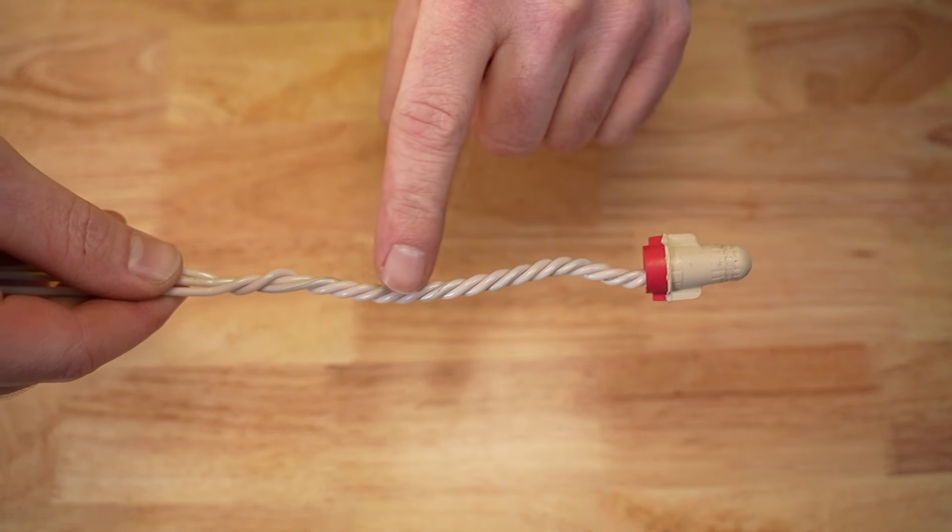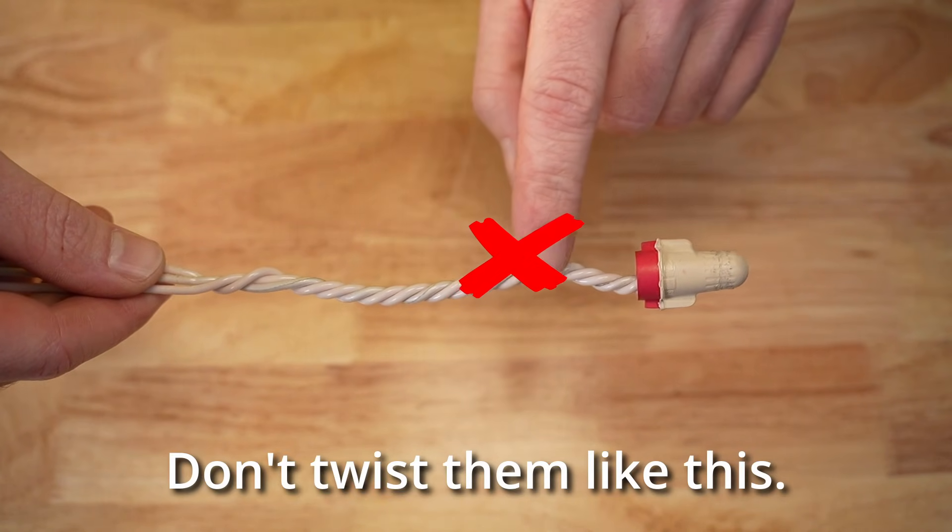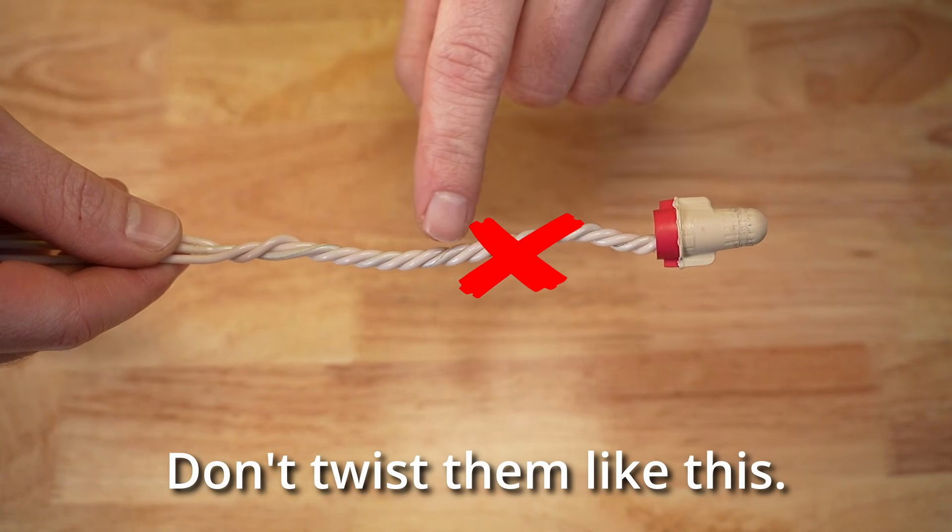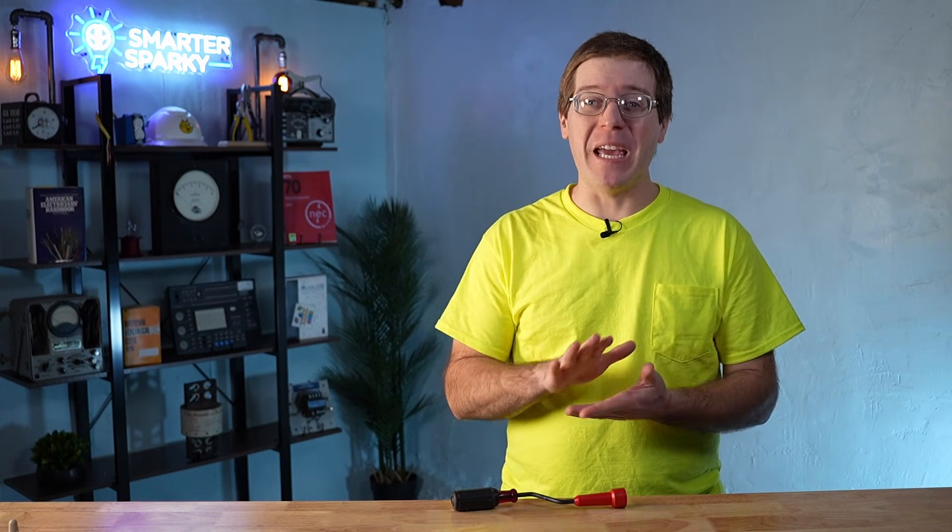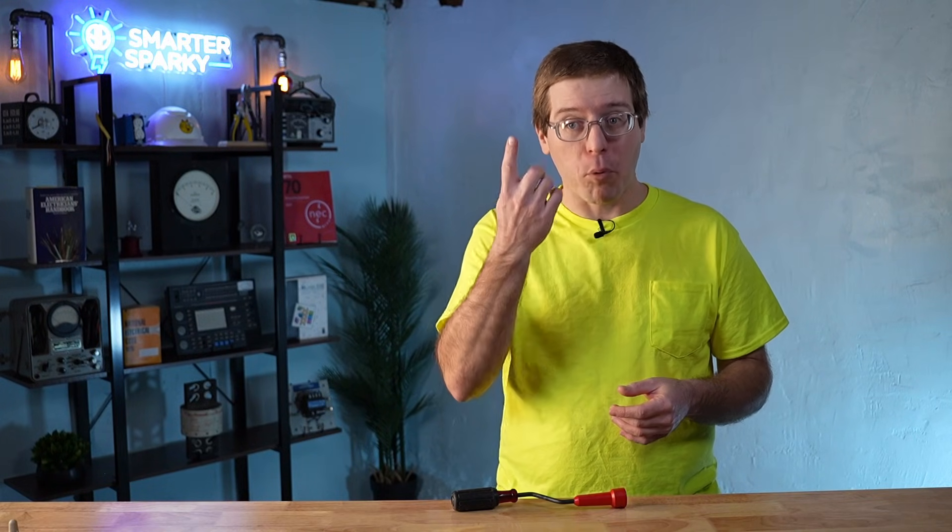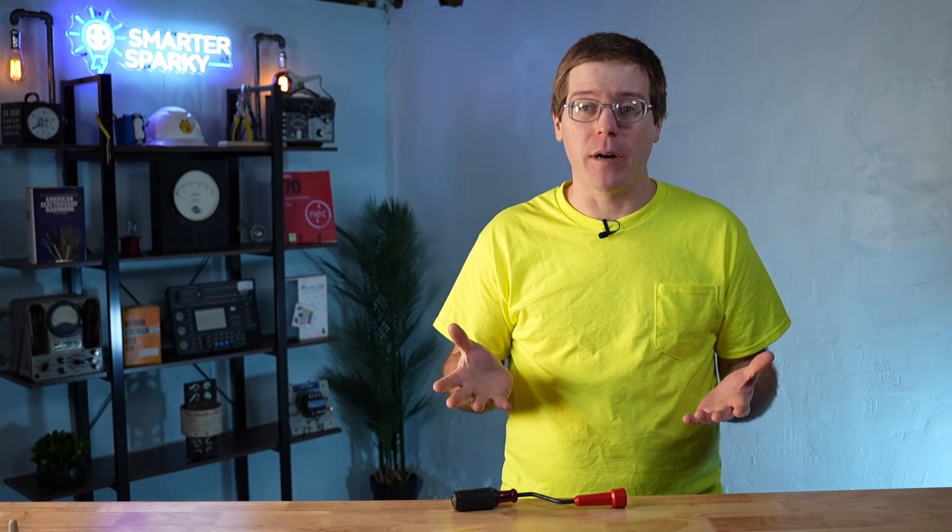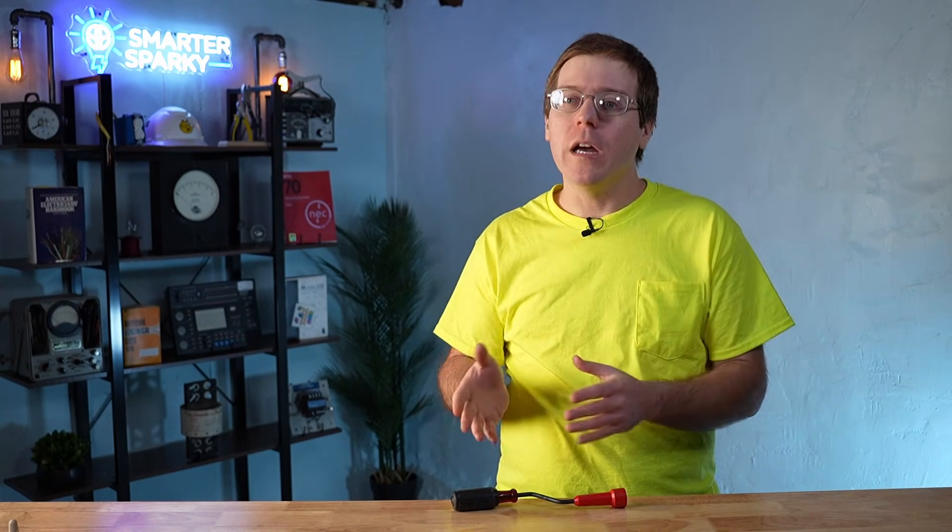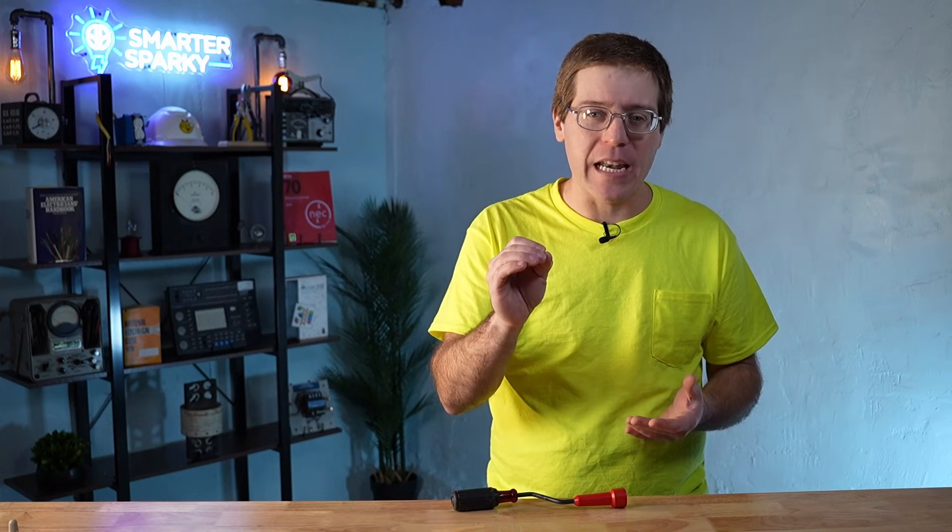However, when used incorrectly, they can easily over twist a splice, which creates problems down the road. Over twisting can make future troubleshooting and maintenance a headache. And in some extreme cases, it can actually cause the conductor to break through the top of the wire nut, potentially exploding live copper. No matter how you install a wire nut, by hand or with a tool, the goal is a secure connection, not maximum torque.